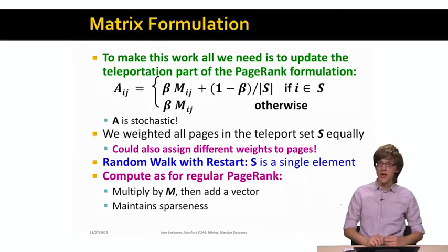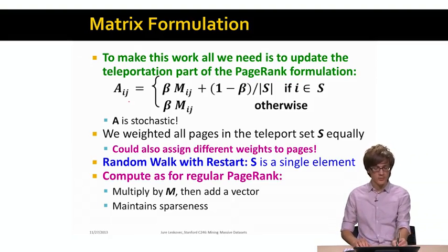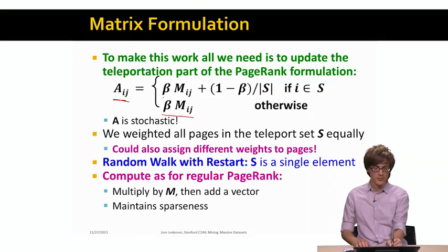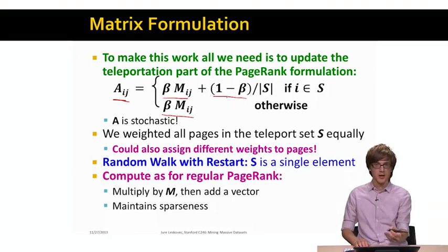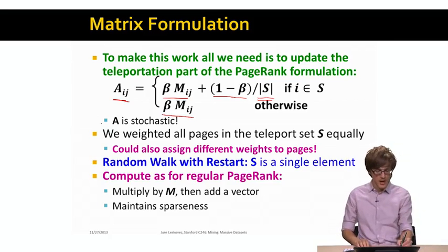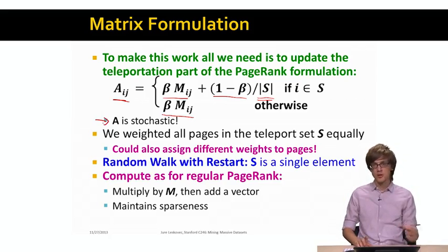The way we do this is essentially the same as before. All we need to do is change the formulation a bit. We change the definition of our matrix A: if entry i is not in the teleport set S, then nothing changes. But if entry i is in the teleport set, we add the teleport edges — we have beta times M_ij plus (1 - beta) divided by |S|. So with probability (1 - beta), we jump into one of the S pages, with probability 1/|S| for each. A is still stochastic, power iteration still works, and our PageRank algorithm still works. Our matrix A is now just a bit different.